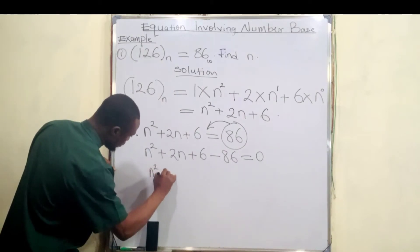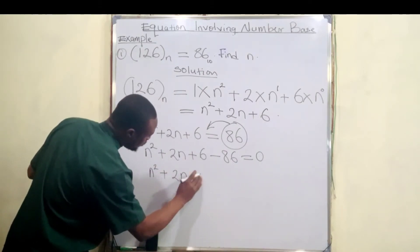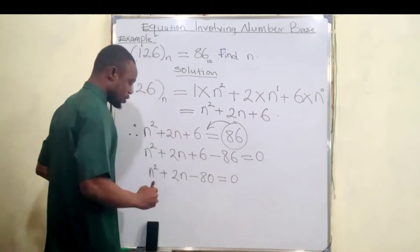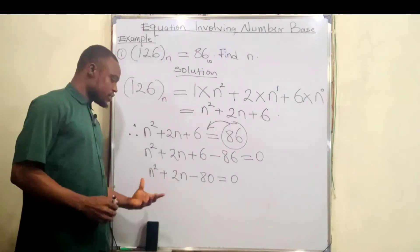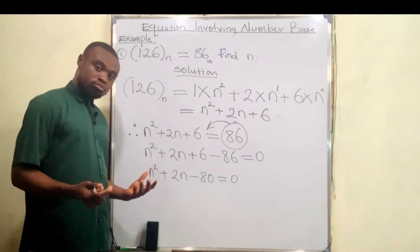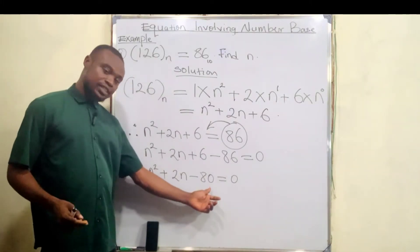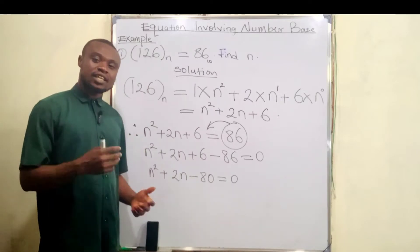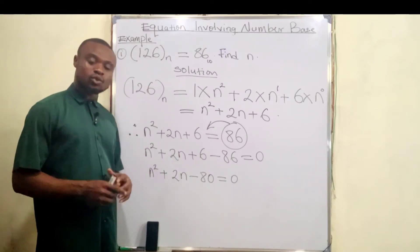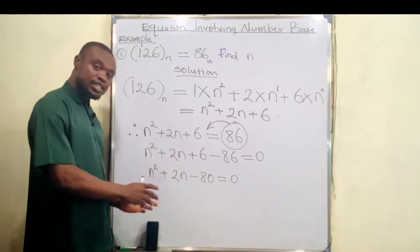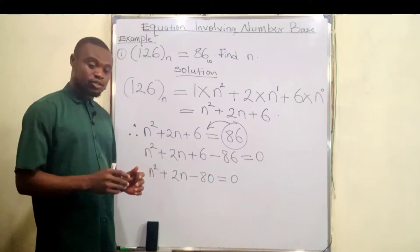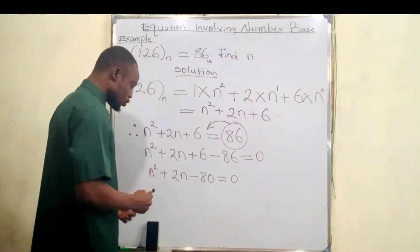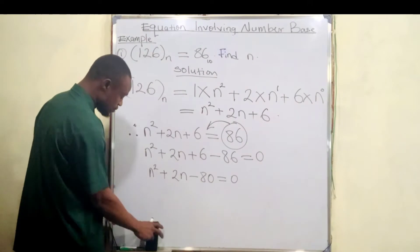So we have n² + 2n − 80 = 0. Now how do we factorize this expression? As I said in my previous video, the first term multiplies the last term: n² multiplied by −80 gives −80n². The factors we need are 10 and 8, because 10 times 8 is 80, giving us +10 and −8, which we use to replace the middle term.